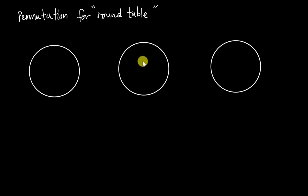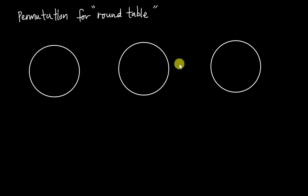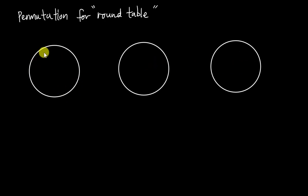So let's say we have three identical round tables. These three tables have the same circumference, same midpoint, and same radius — so basically they are the same table. I'm going to place three persons into one table and show you how we can place them.